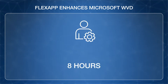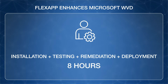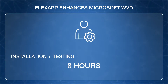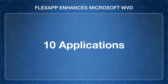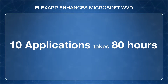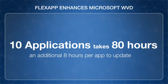It takes an admin about 8 hours to complete the process of installing, testing, remediating and deploying just one application. This cycle must be repeated every time an app is freshly installed, updated or removed. If you're running an image with 10 applications, it takes 80 hours to just set up this image, and another 8 hours every time you need to update just one of these applications.